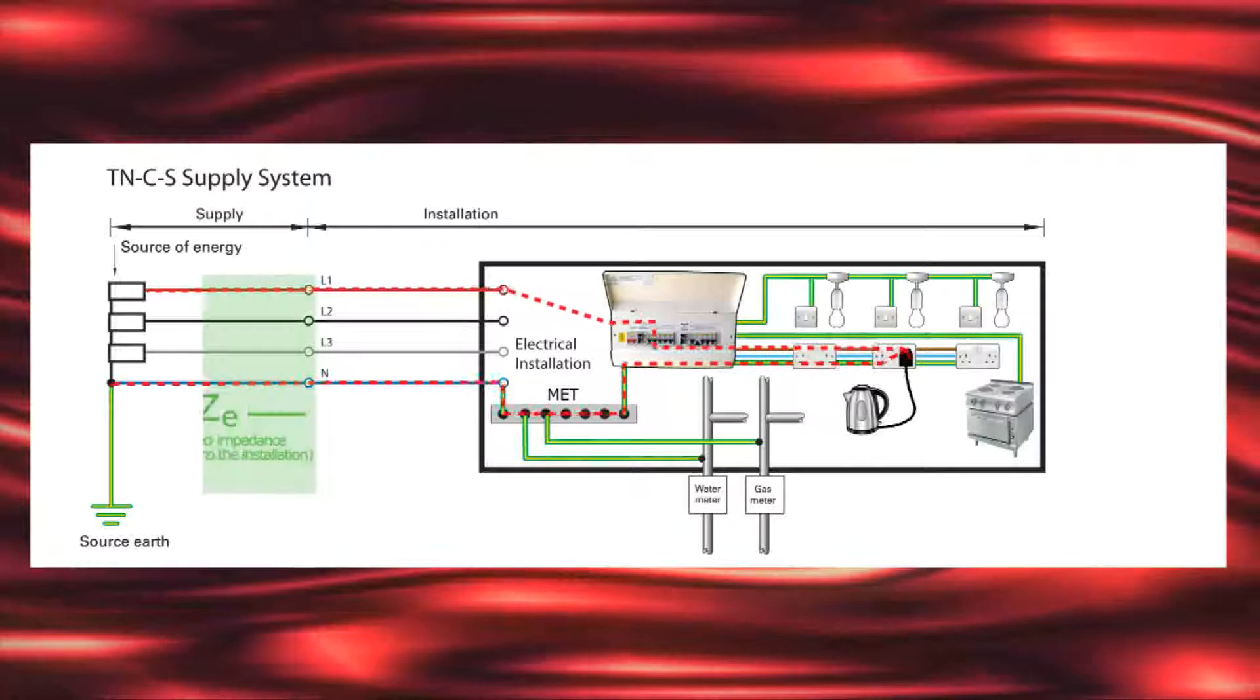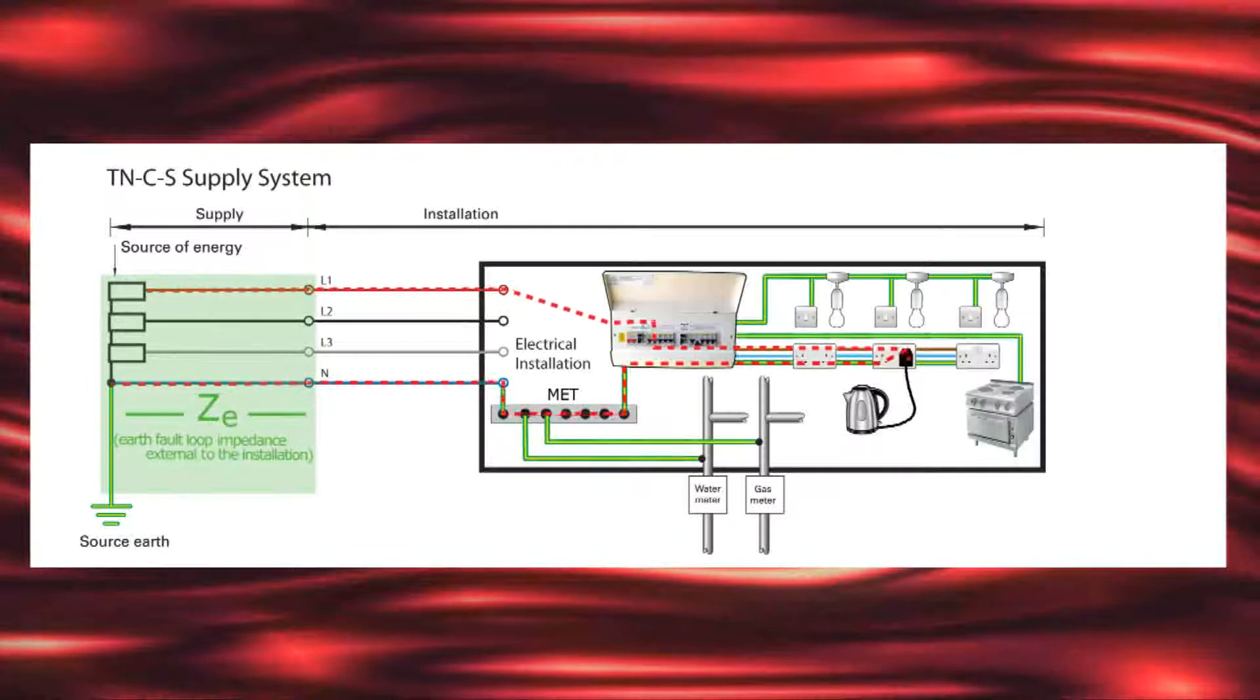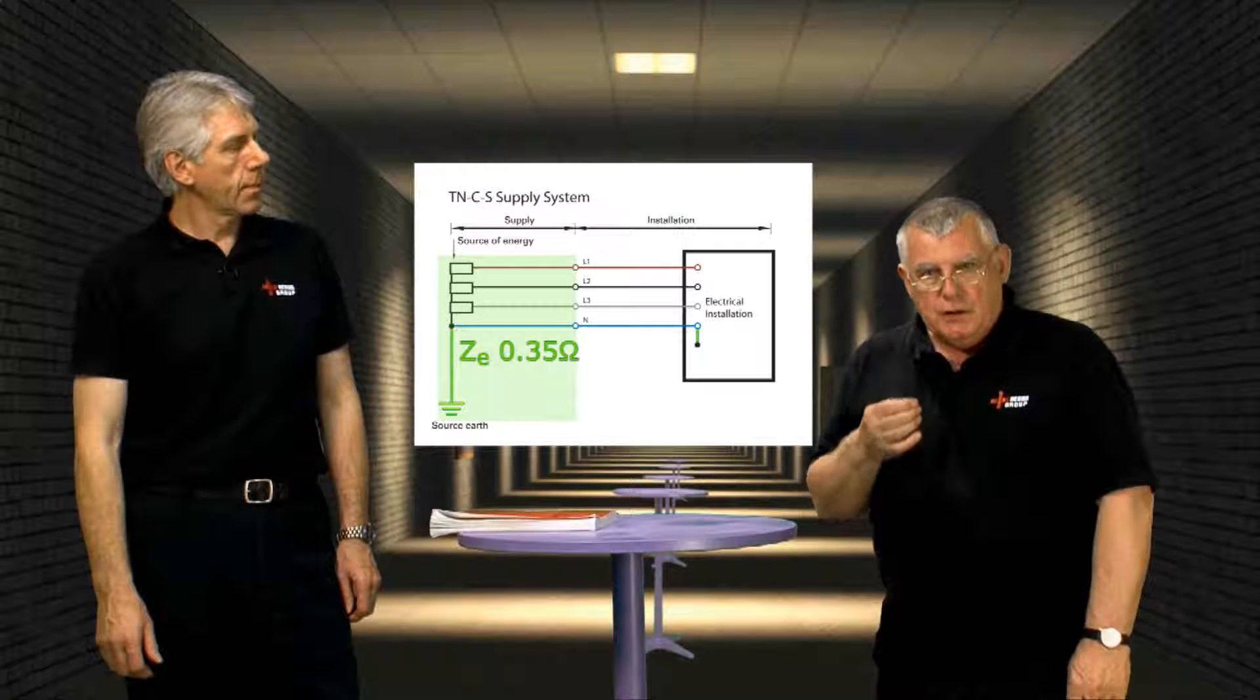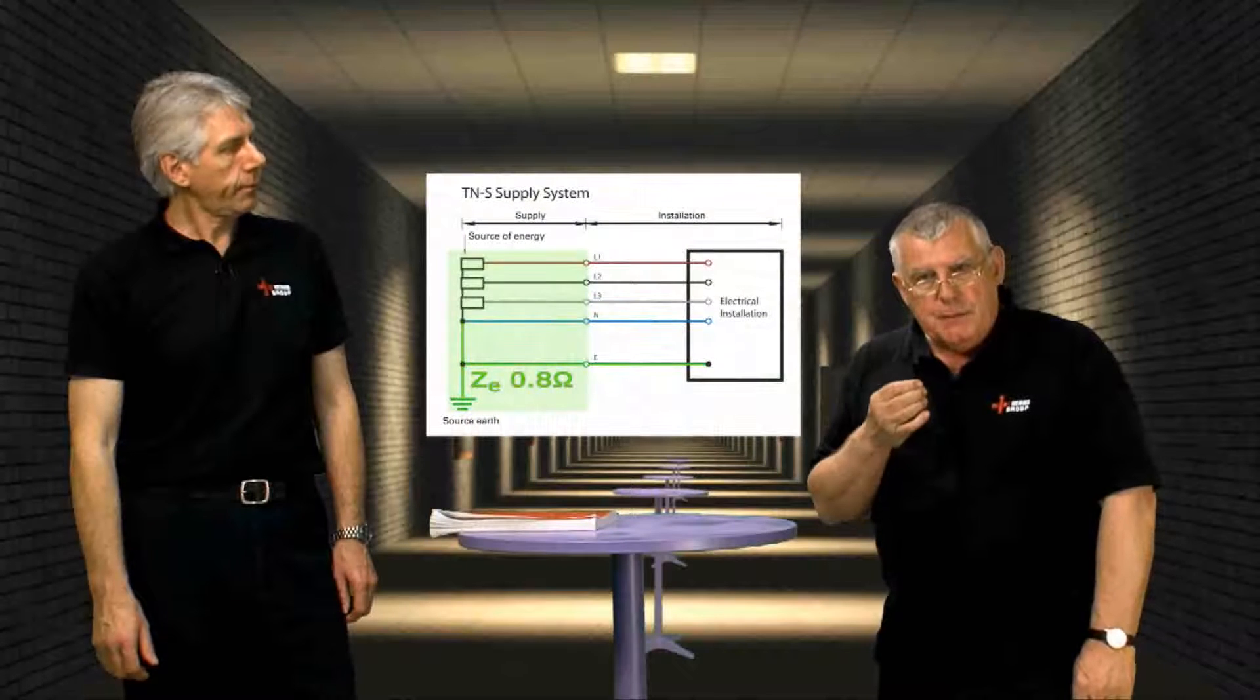It's important to point out that the portion of the earth fault loop path external to the installation is known as ZE. Electricity distributors declare values for ZE on a TN-C-S system to be 0.35 ohms and on a TN-S system to be 0.8 ohms. So the principle of automatic disconnection of supply is that, using Ohm's law, the low impedance path to earth means that earth fault currents should be of high magnitude, making them easier for the circuit protective device to distinguish against overloads and disconnect the supply quickly.